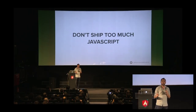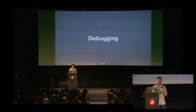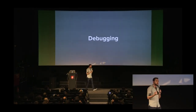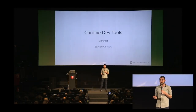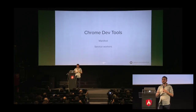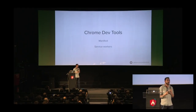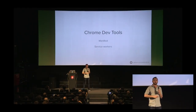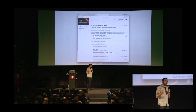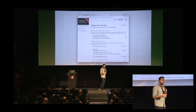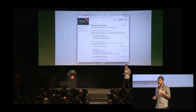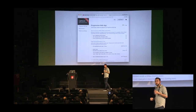Chrome has really nice debugging tools — you can see if the manifest is working without deploying, and see service workers, check if they're registered or unregistered. There's also a Chrome extension and Node module called Lighthouse, which gives you a dynamic checklist: it tests your website, tells you what's working, what's not, and what goals you need to hit. Lighthouse is a must if you're working with progressive web apps.